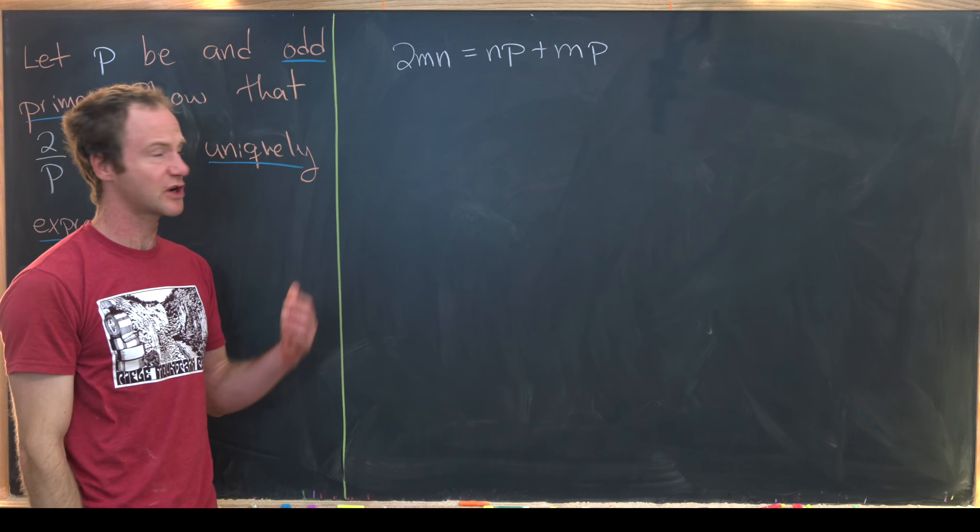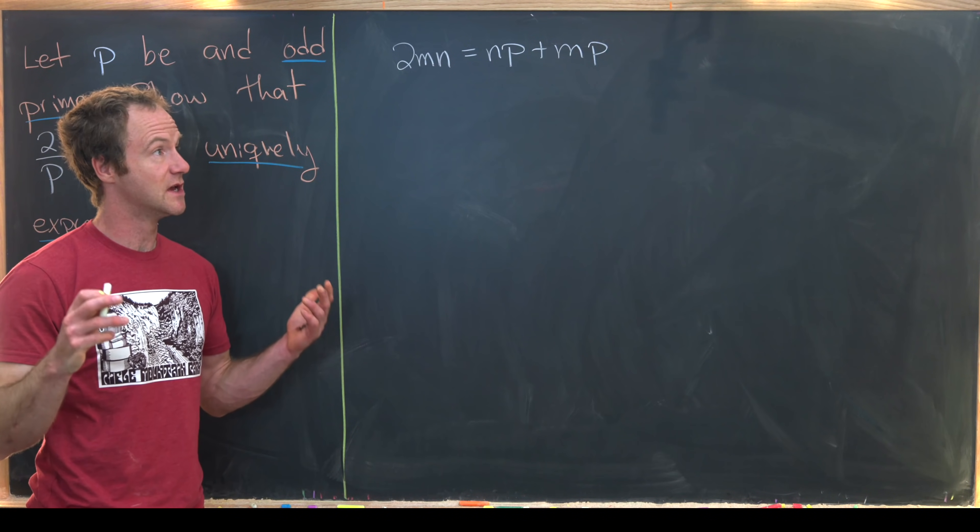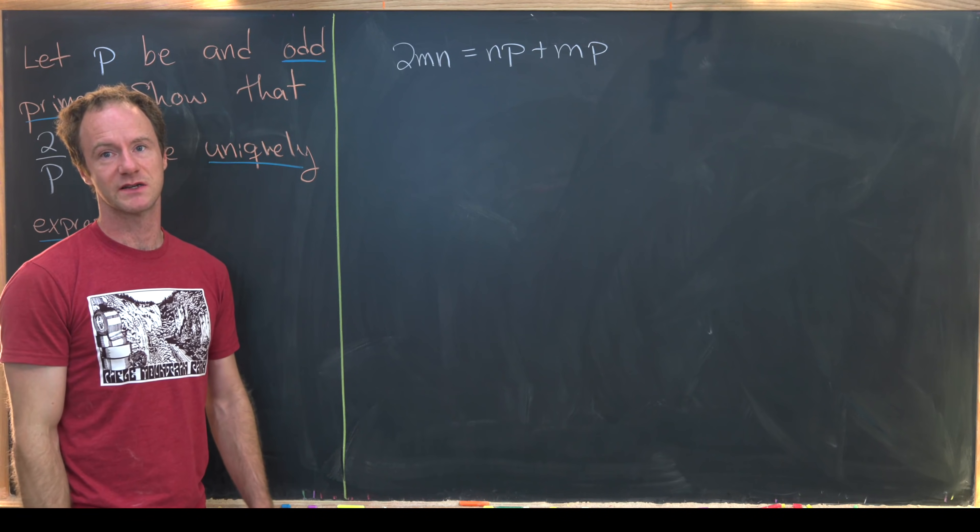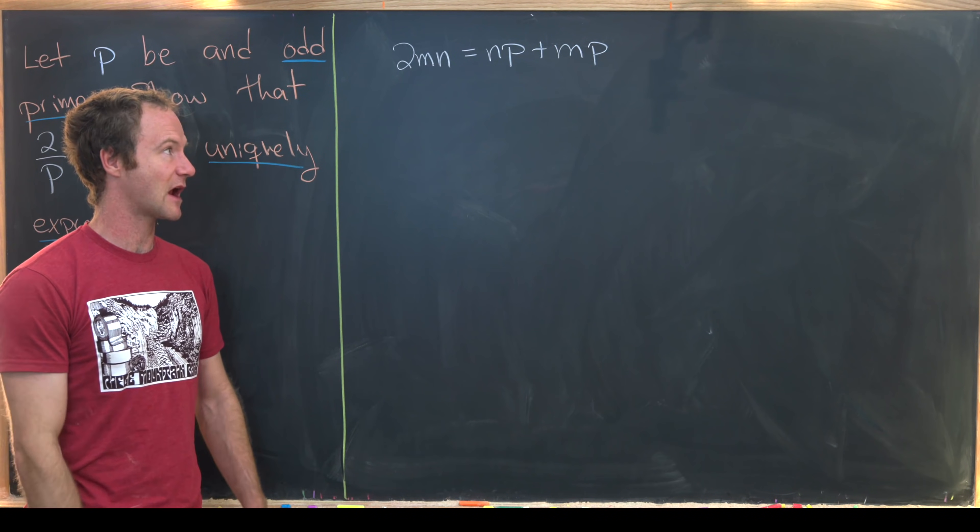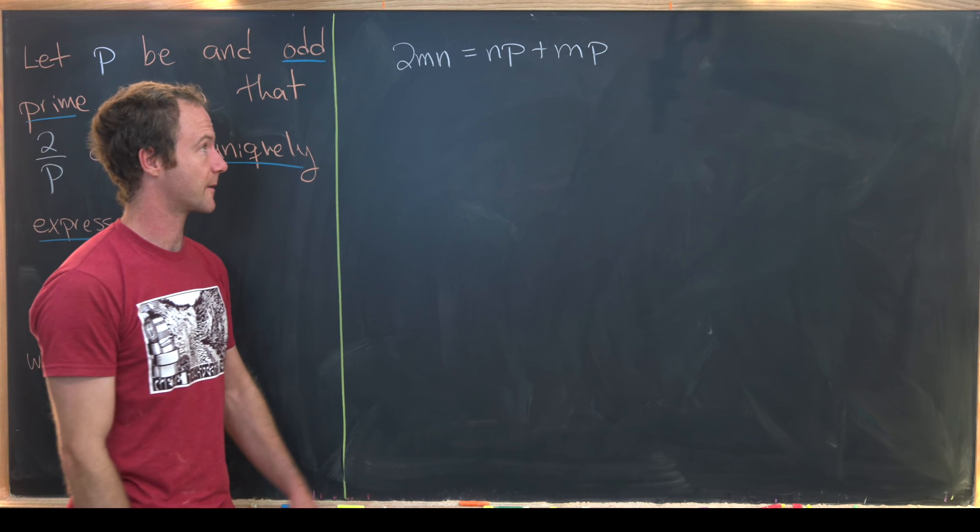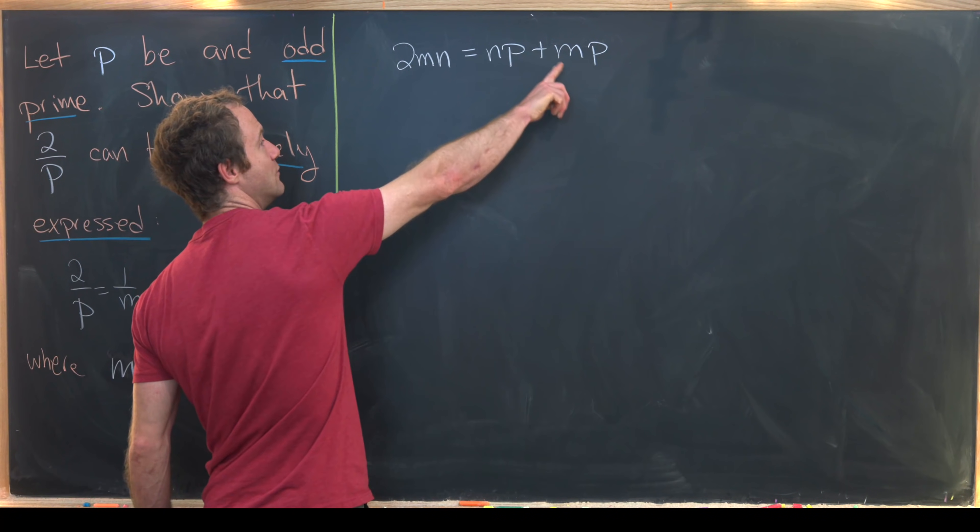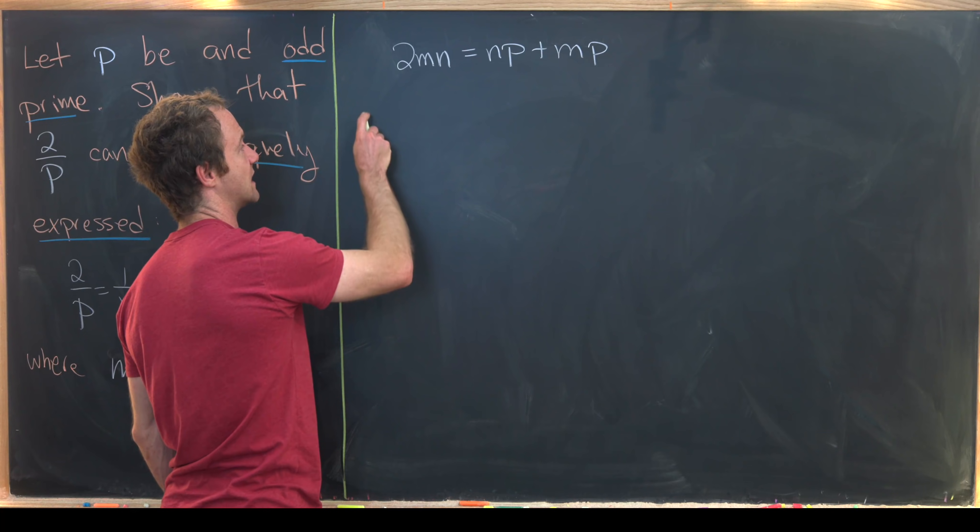Now from here we want to do a trick which I like a lot and that's like complete the product. This is maybe in parallel to the notion of completing the square. So I can do that by moving this stuff over to the other side of the equation. I'll have 2MN minus NP minus MP equals 0.